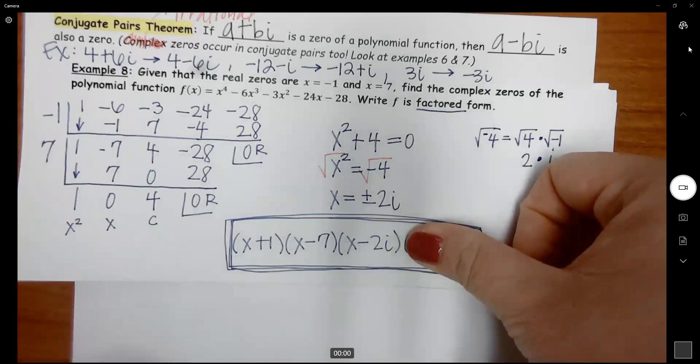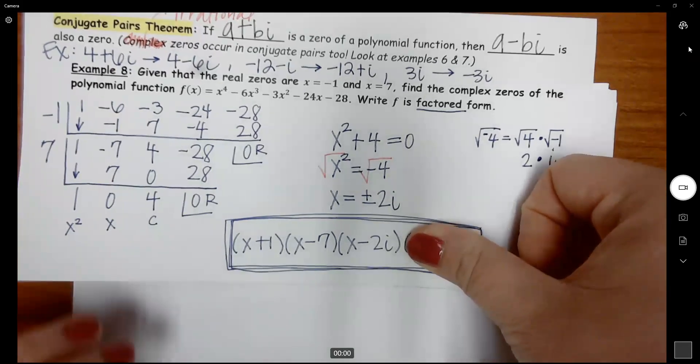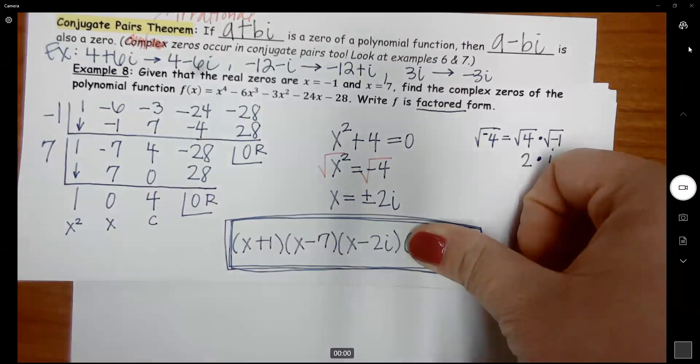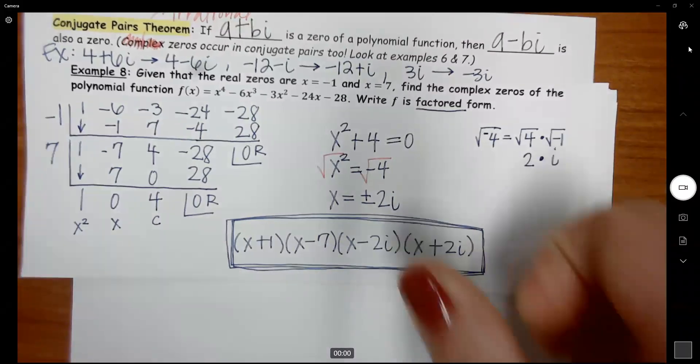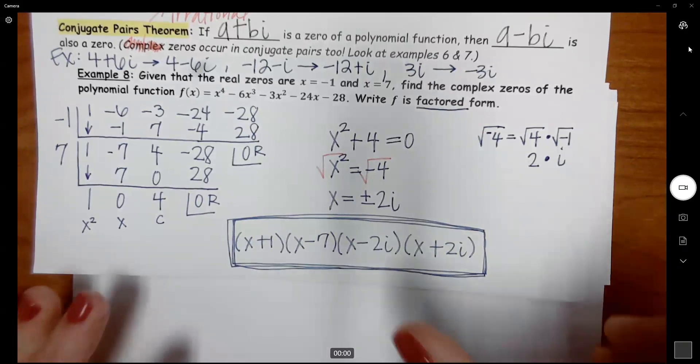So like if they gave me X minus 2i, well, these have to come in conjugate pairs. So I know that the other factor would have to be X plus 2i. So we're working backwards now.